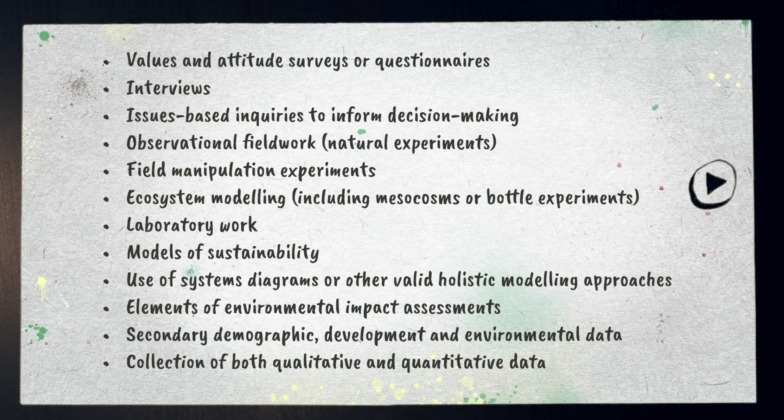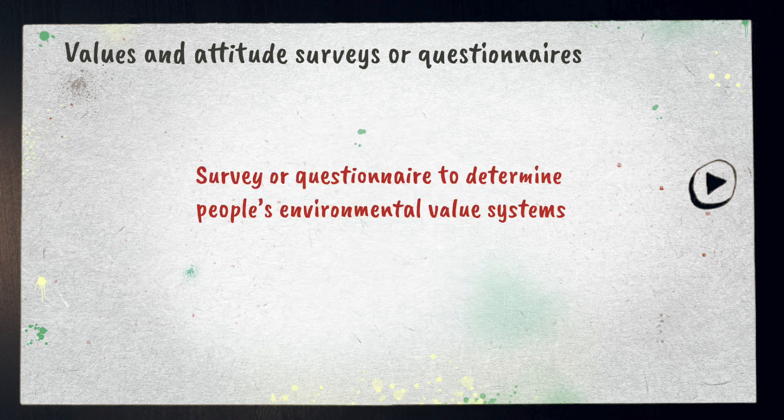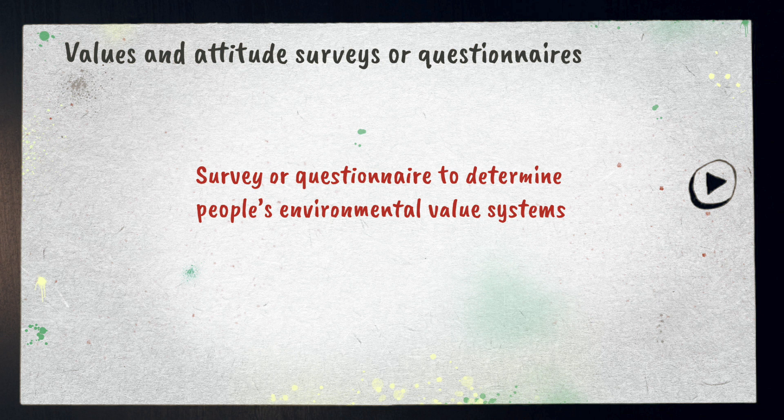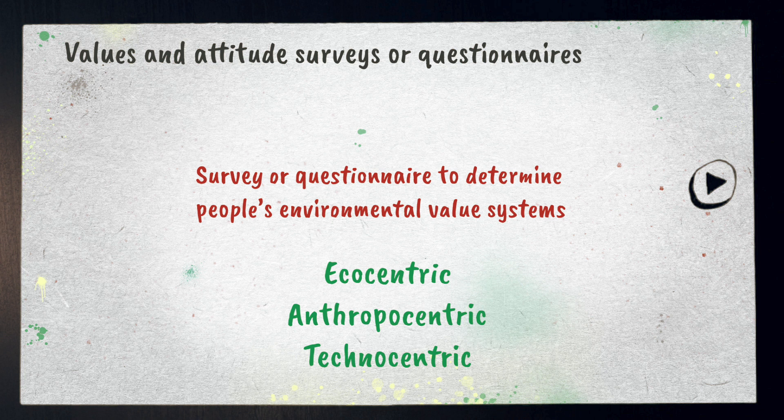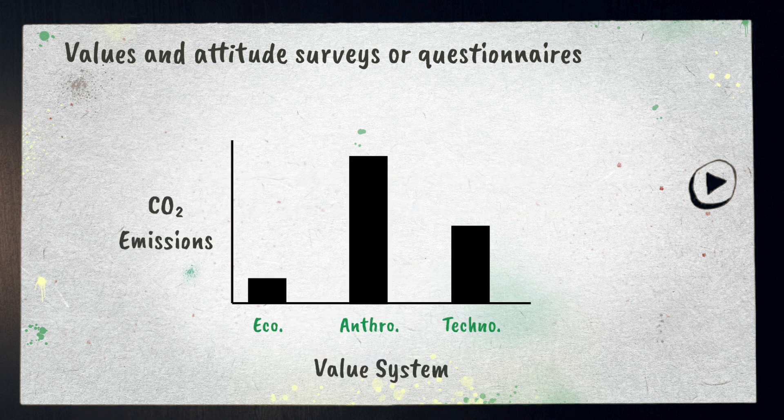First on the list is values and attitude surveys or questionnaires. One example could be to put out a survey or questionnaire to determine people's environmental value systems. The responses to the questions could be used to indicate what sort of viewpoints people hold. Perhaps you could try to find out if a person's environmental value system correlates with some other variable.